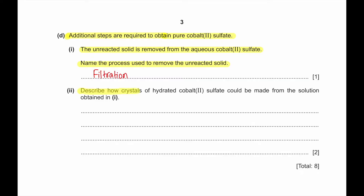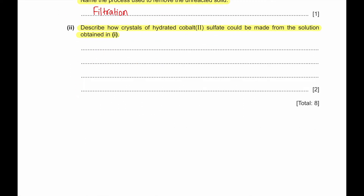Describe how crystals of hydrated cobalt 2 sulfate could be made from the solution. First, we need to evaporate the solution of cobalt 2 sulfate and evaporate most of the water until it reaches the point of crystallization. Then we allow it to cool so that it crystallizes.